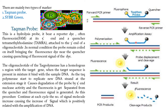The oligonucleotide of the TaqMan probe has a homologous region with the target gene. When the target sequence is present in the mixture, it binds with the sample DNA. As Taq polymerase starts to replicate the new DNA strand at the extension stage, it causes degradation of the 5' end of the probe by 5' end nuclease activity, and the fluorescent dye is separated from the quencher, generating a fluorescent signal. As this process continues at each cycle, the number of signal molecules increases, causing an increase in signal positively related to DNA amplification.